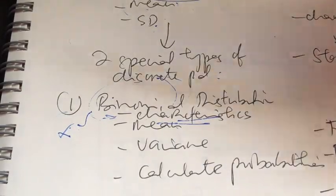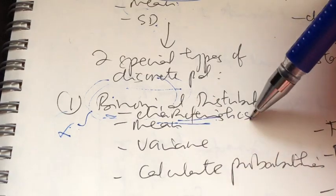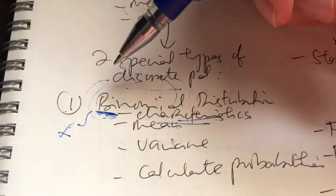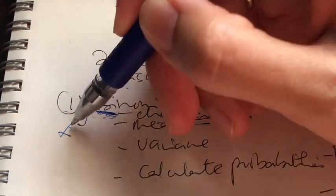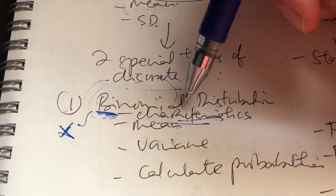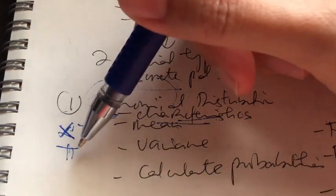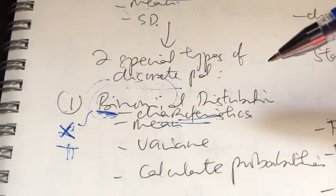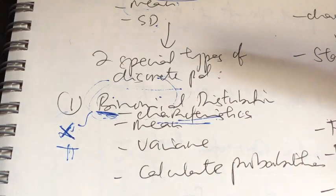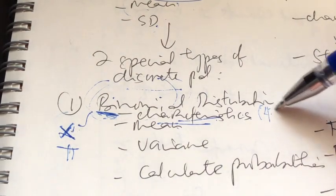There are two special types of discrete probability distribution. The first is the binomial distribution. Recall the four characteristics: from the word 'bi', there are two outcomes — success and failure. The number of successes is our random variable x. The probability of success, denoted as pi, is fixed. There is also a fixed number of trials (sample size). Finally, there is independence between the outcomes of one trial and another. Remember those four characteristics of the binomial distribution.